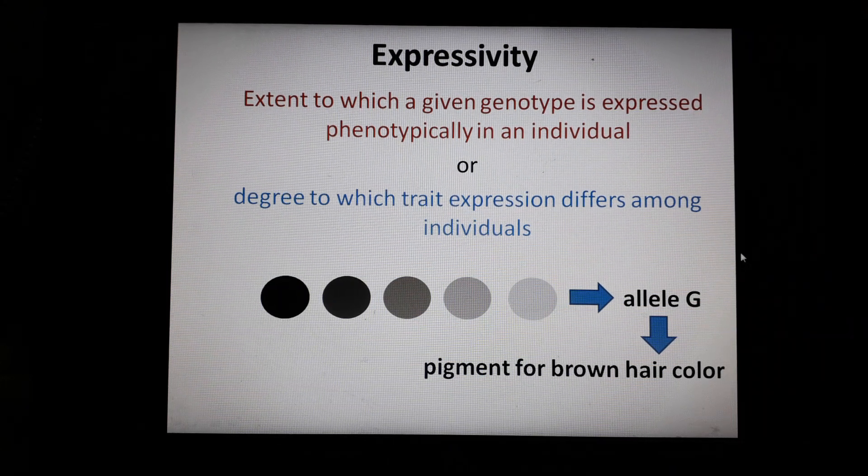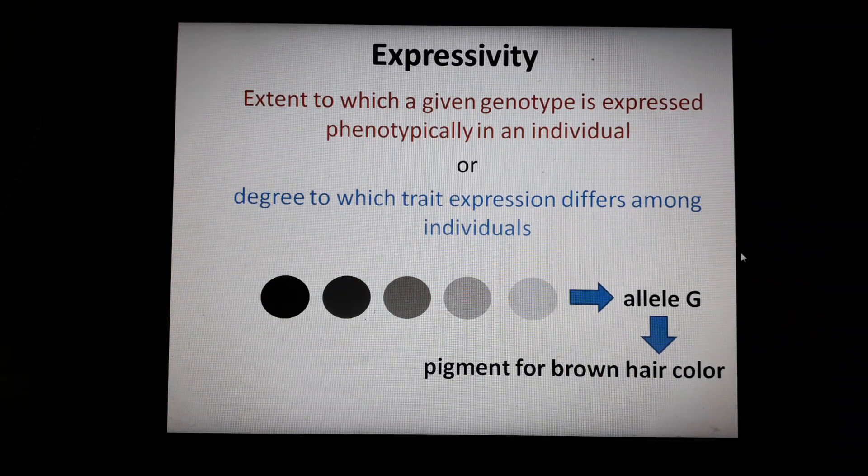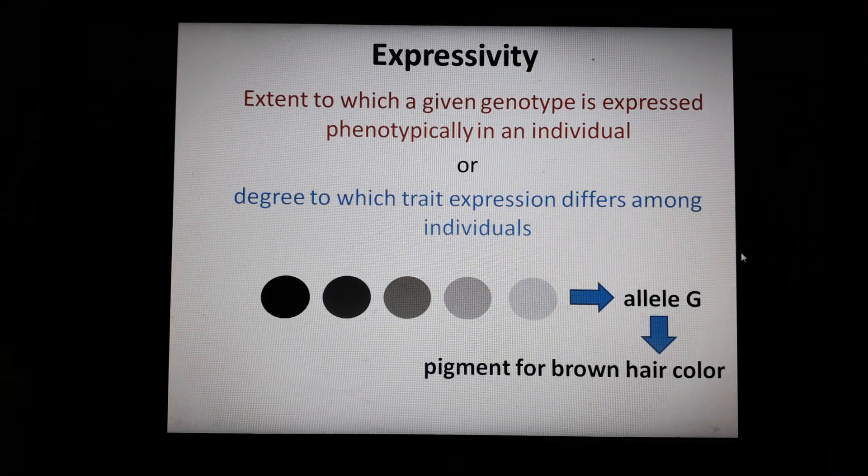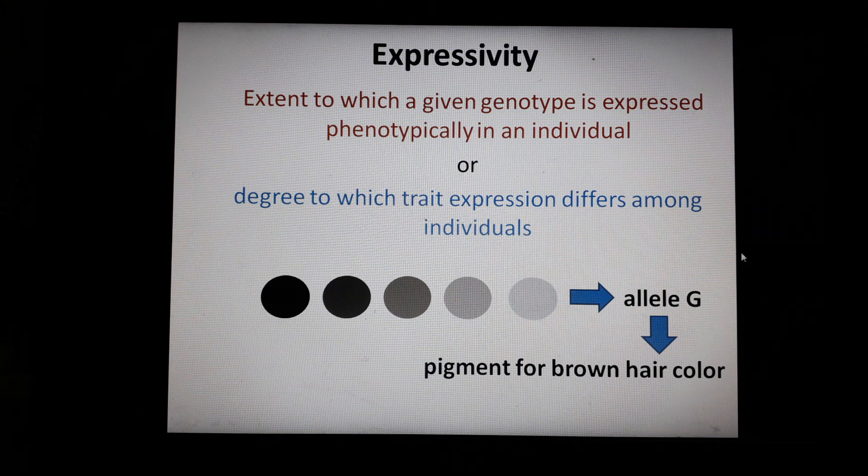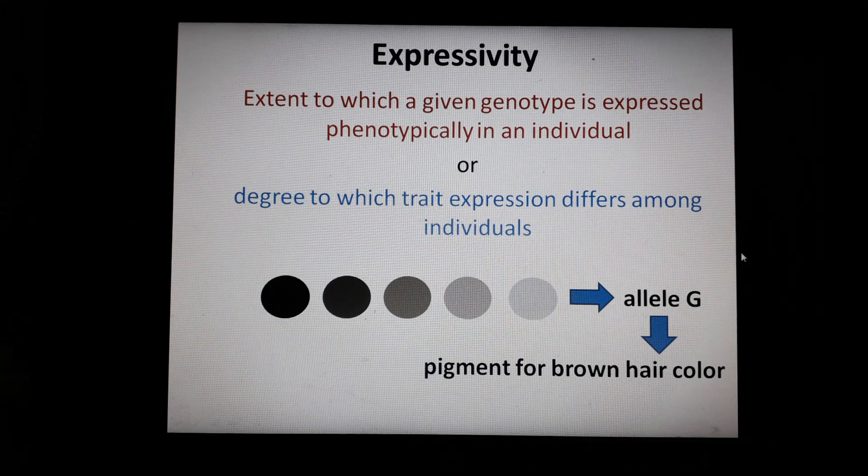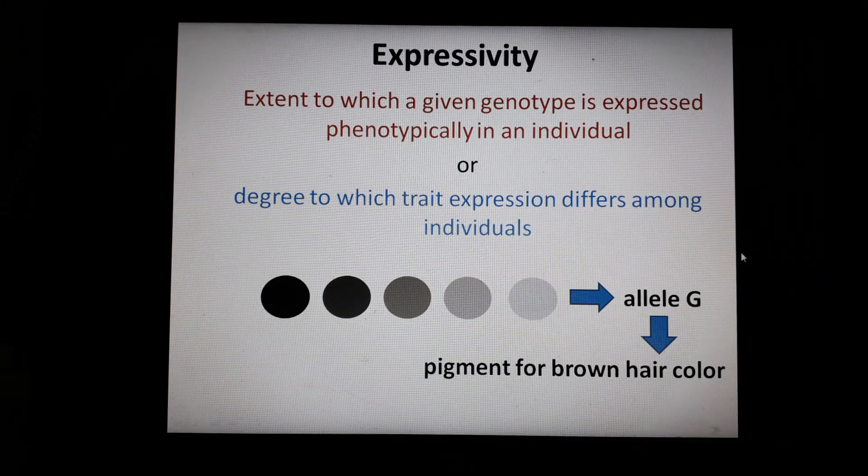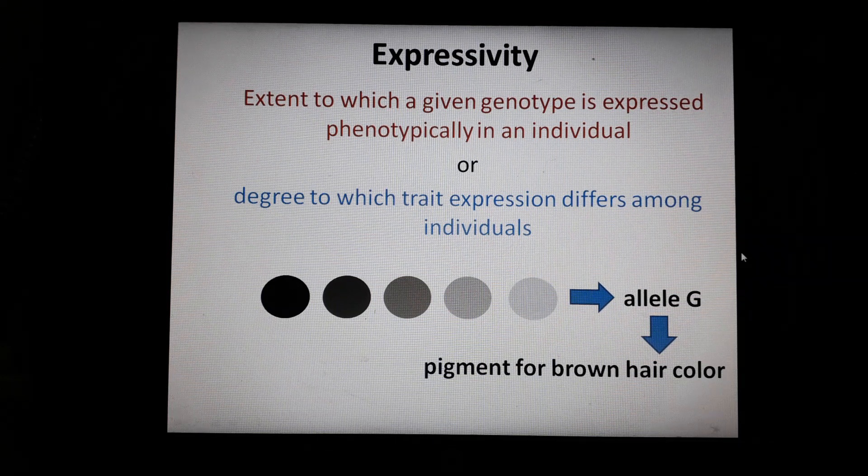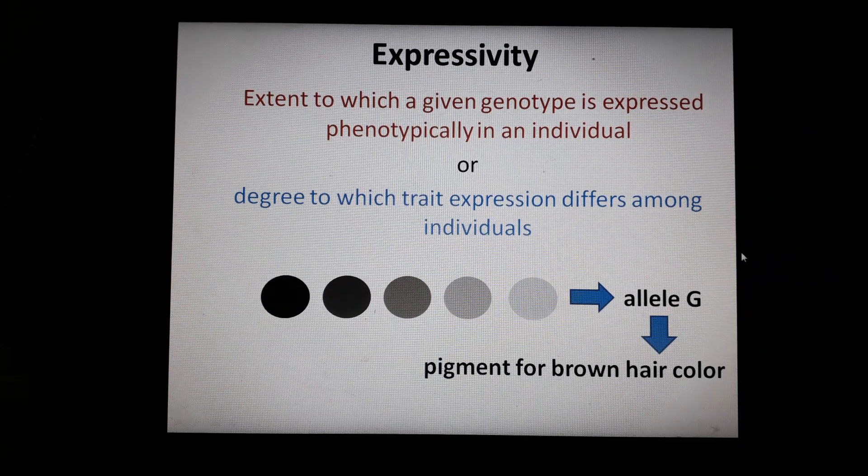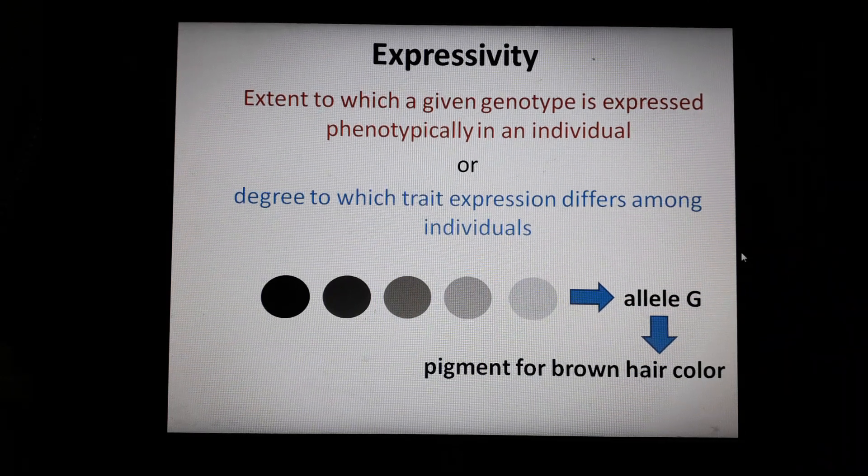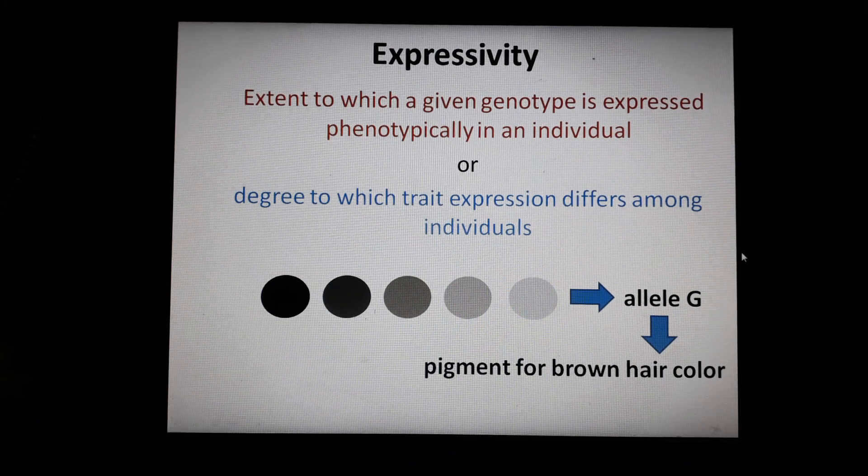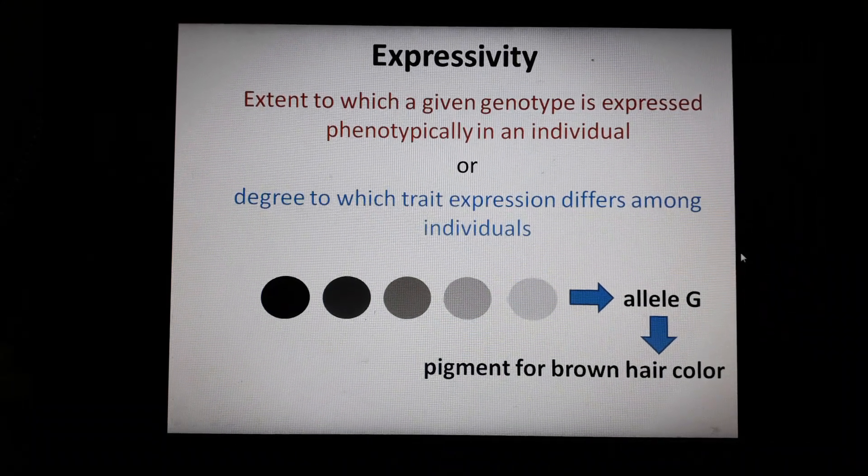That allele G, the genotype, to what extent will it be expressed phenotypically in an individual? What you have is expressivity. Because of this variation in expression, you have different shades of brown hair color. You can also see brown eyes differ in shades. All of this is because of expressivity.